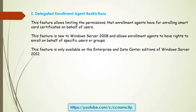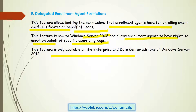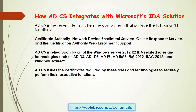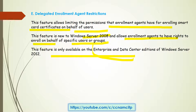The next feature is delegated enrollment agent restrictions. This feature allows limiting the permissions that enrollment agents have for enrolling smart card certificates on behalf of users. It allows enrollment agents to have rights to enroll on behalf of a specific user or group. This is also available on the Enterprise and Datacenter editions of Windows Server 2012 and 2008.